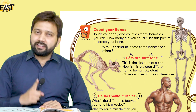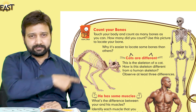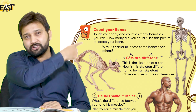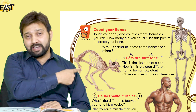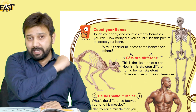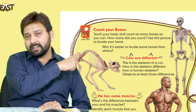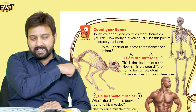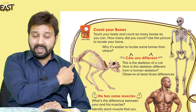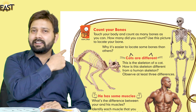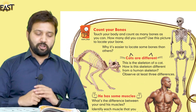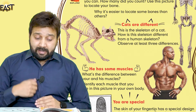پہلا difference: جو human skeleton ہے وہ straight ہے اور جو cat کا skeleton ہے وہ curve میں ہے. دوسرا difference: کیا آپ کو human skeleton کے اندر کوئی tail نظر آ رہی ہے؟ No — جبکہ cat skeleton کے اندر tail ہے. باقی آپ نے خود سے observe کرنا ہے۔